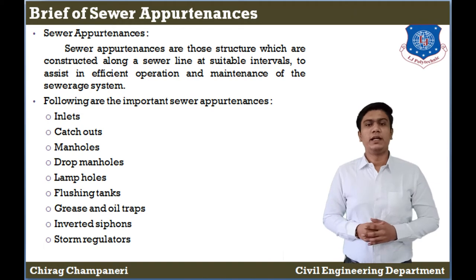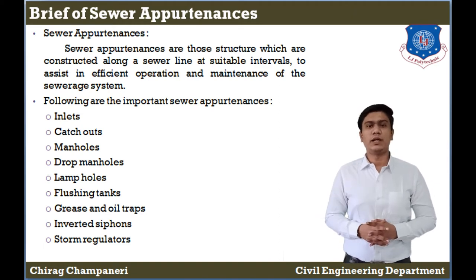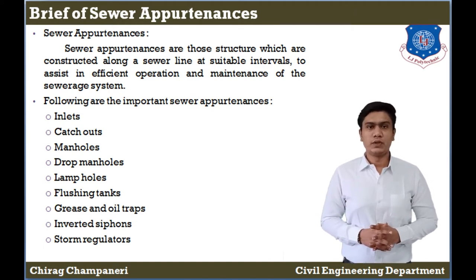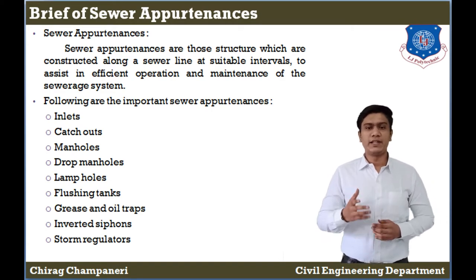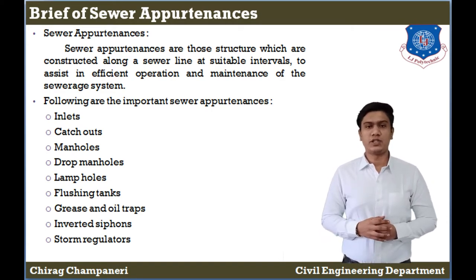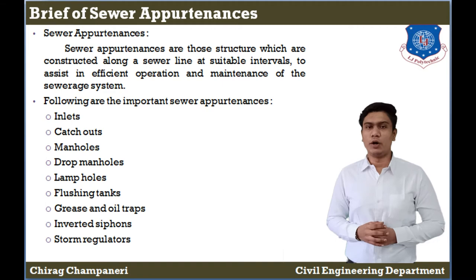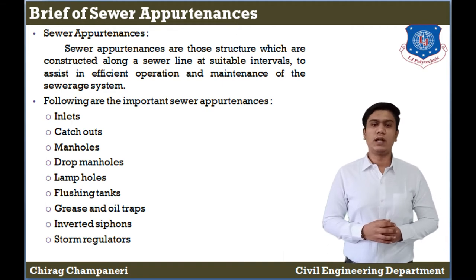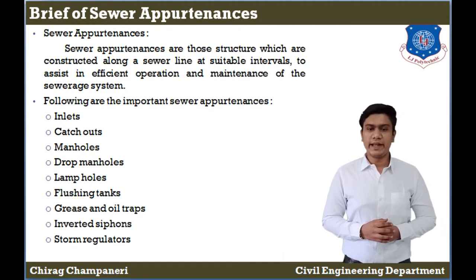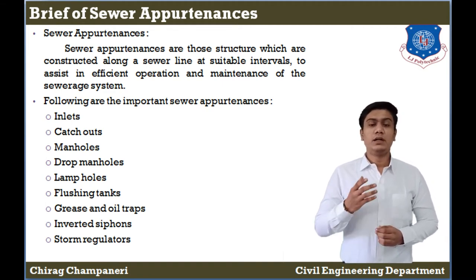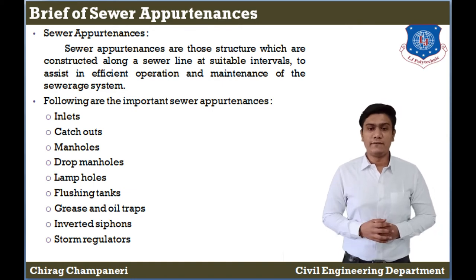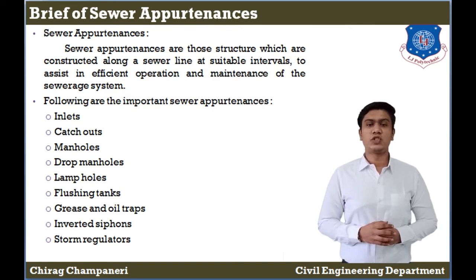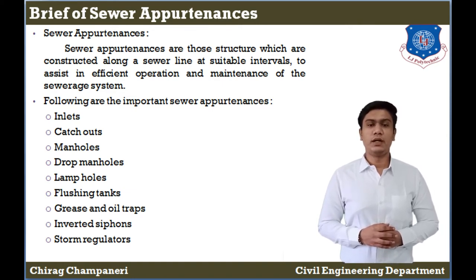The types of civil appurtenances include: inlets, catch pits, manholes, drop manholes, lamp holes, flushing tanks, grease and oil traps, inverted siphons, and storm regulation structures.